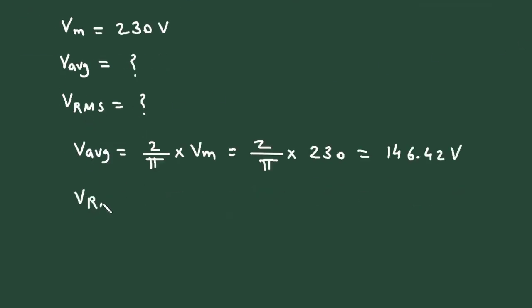Next, VRMS. So VRMS is equal to Vm divided by root 2.